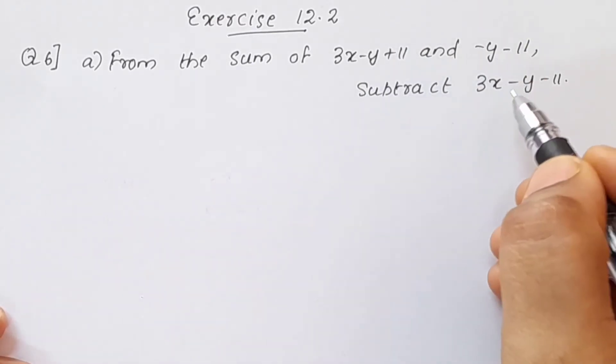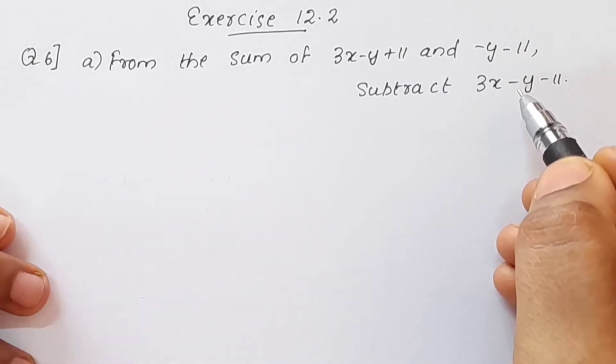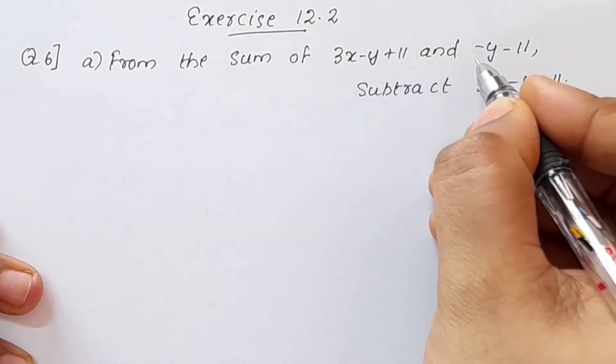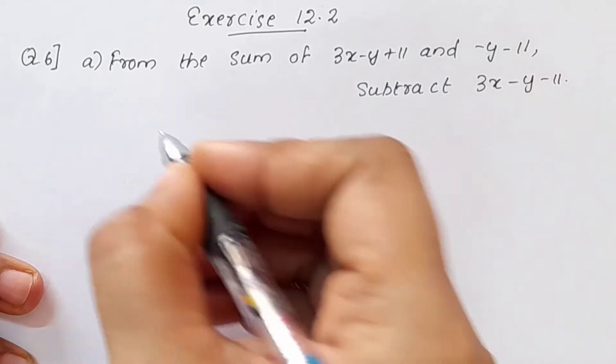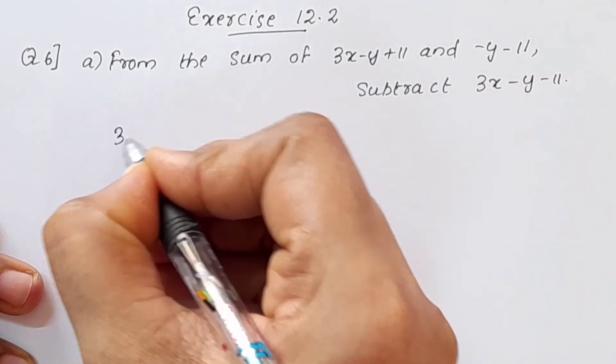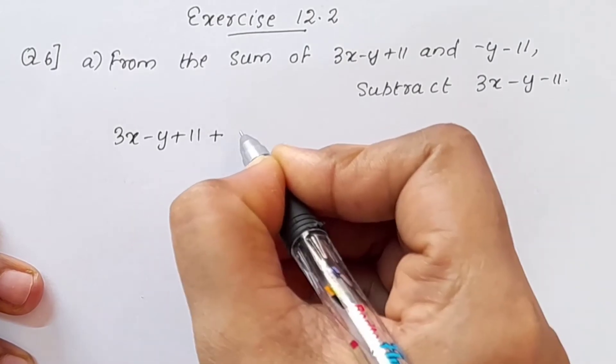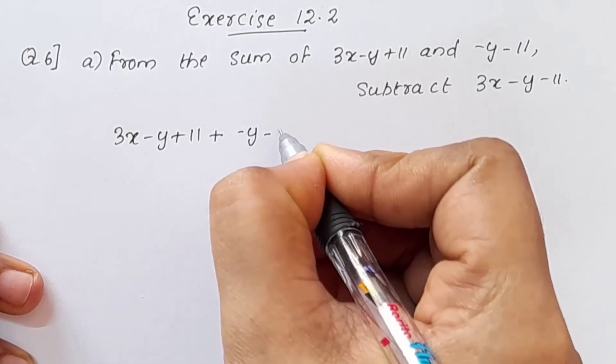So we will subtract this expression. Let's look at the equation. Sum of 3x minus y plus 11 and minus y minus 11.